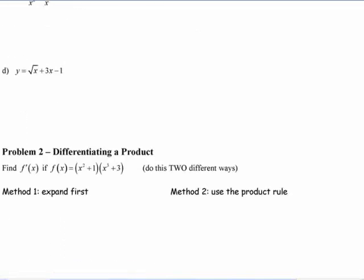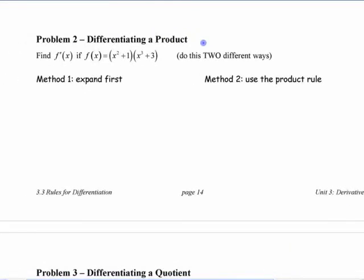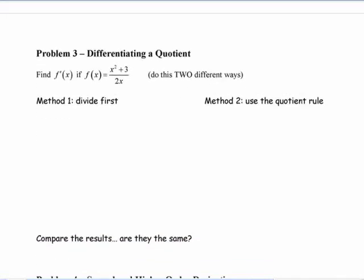In the time that we have left, this is not a proof of the product rule, this problem two, but it's a way of seeing that it works. This is a function that is the product of two functions. I want you to do it two different ways. Expanding first, like doing grade 9 math and then finding the derivative, or using the product rule and just confirm that you get the same thing.